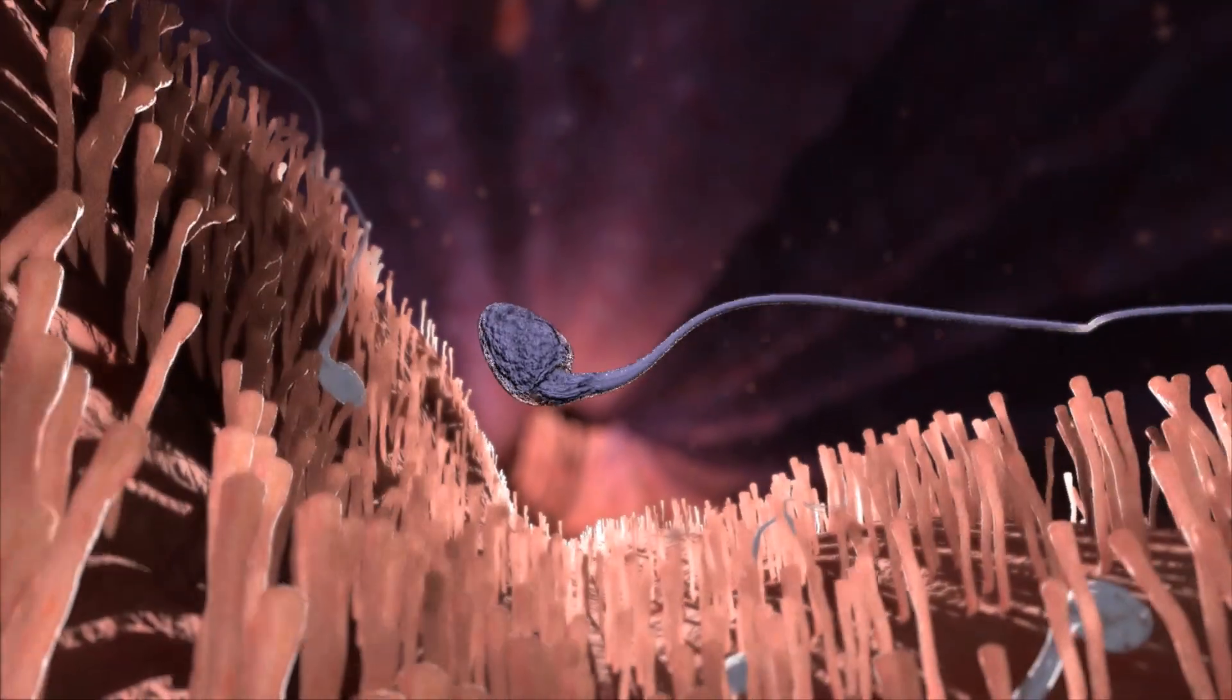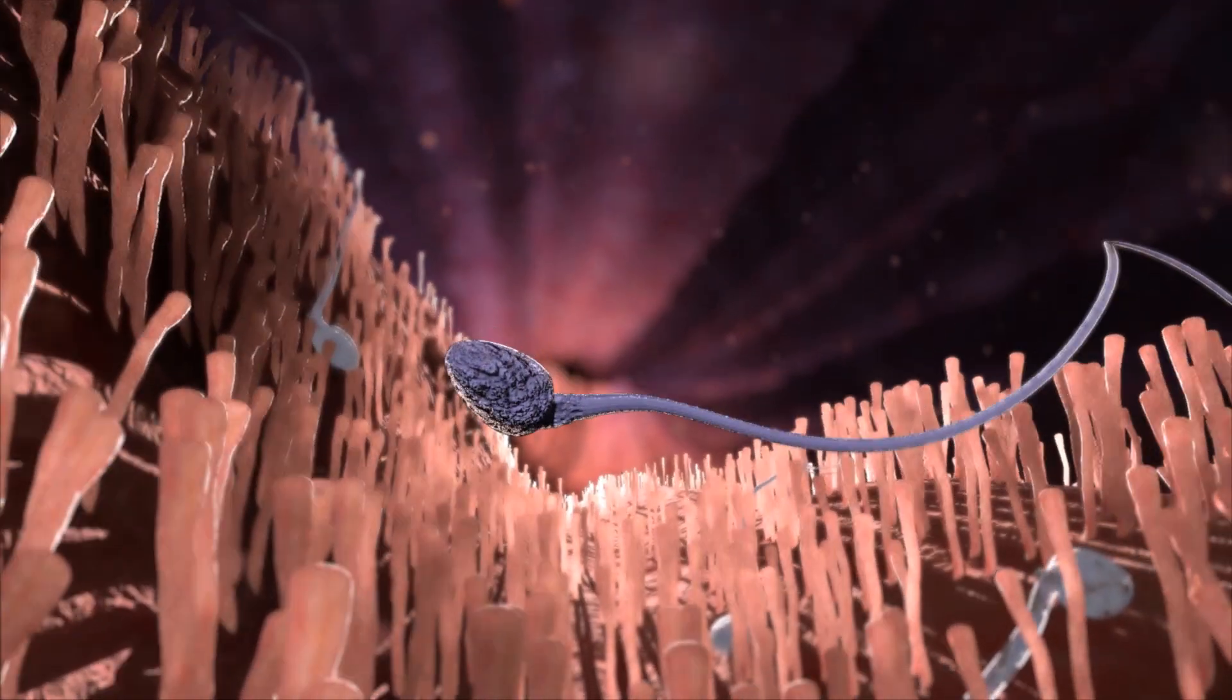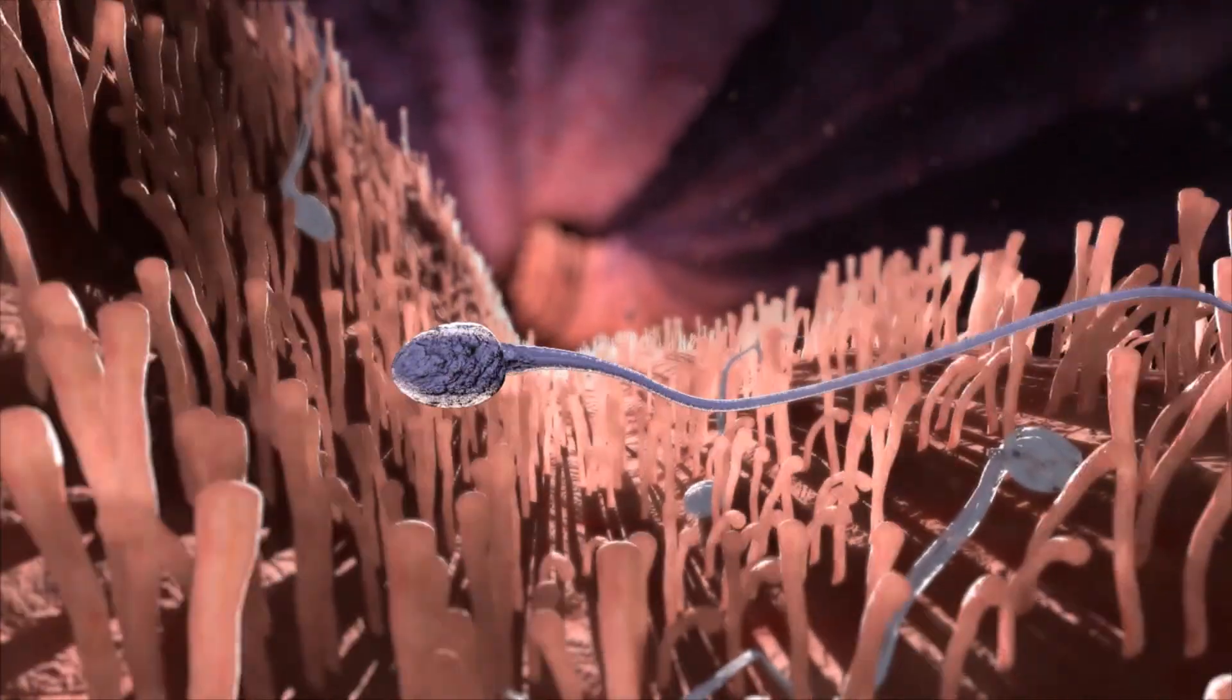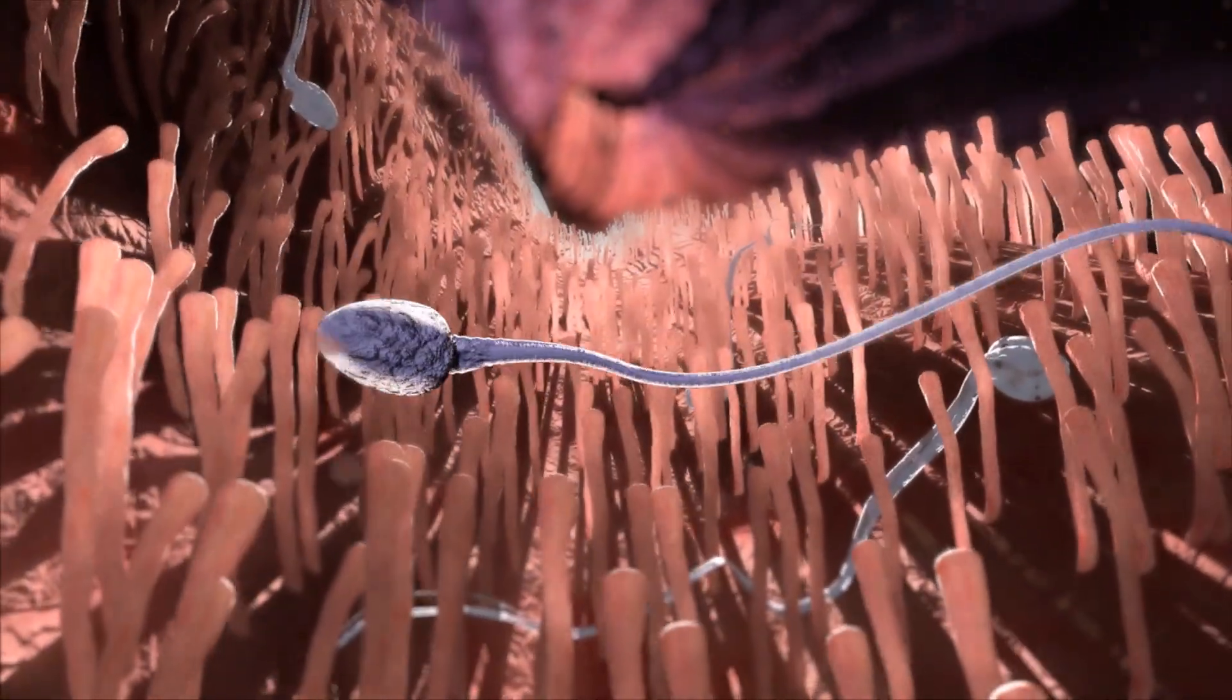Inside the fallopian tubes, sperm cells will survive for some days waiting for the egg cell, but they cannot meet each other. This is the reason why emergency contraceptive pill is not equal to abortion.